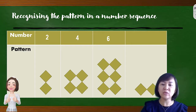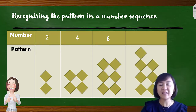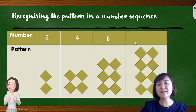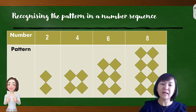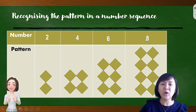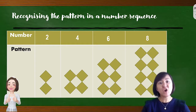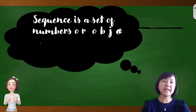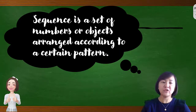How about the next one? We count 8, and we can see the pattern here is also plus 2. So the last one is 8. From the patterns, we can write out the sequence: 2, 4, 6, and 8. Based on the activity, the pattern can be determined by following the previous arrangements. Therefore, we can conclude that a sequence is a set of numbers or objects arranged according to a certain pattern.